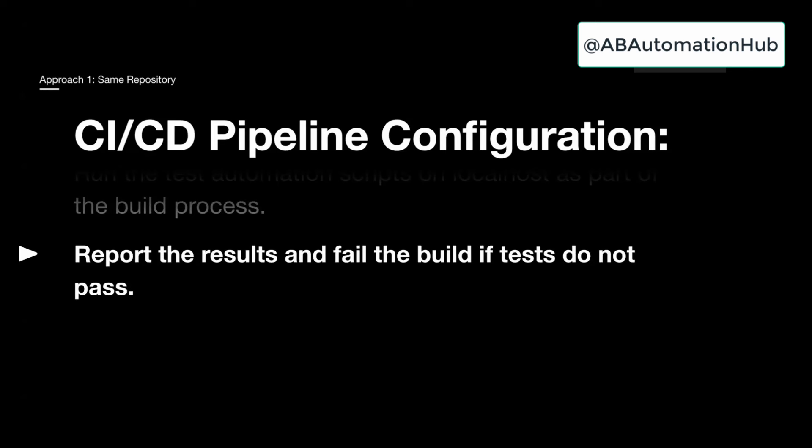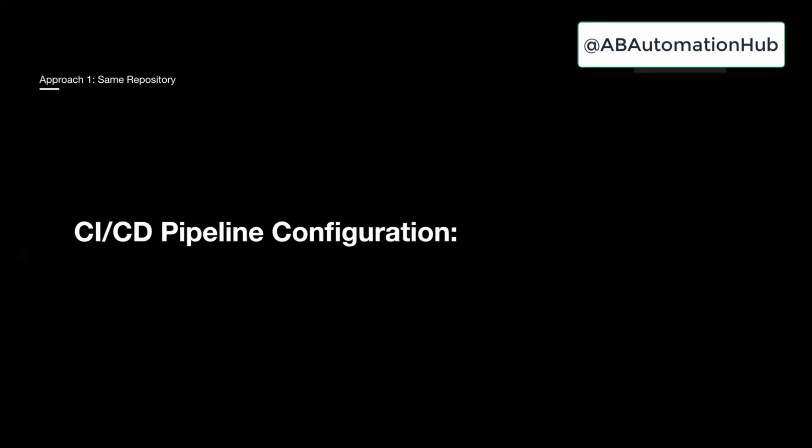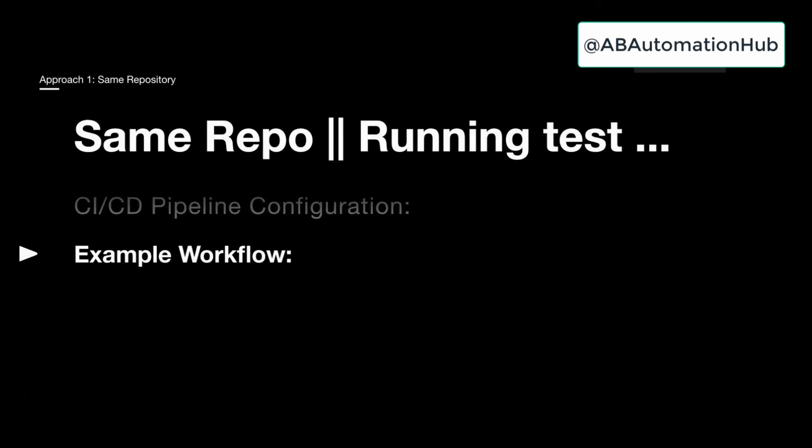So this is our first approach to implement CI/CD: the developer opens a pull request, unit test cases are run, all dependencies are installed, your automation test scripts are called, and based on the result — passed or failed — the next step happens, which is merging your code or fixing the bugs.